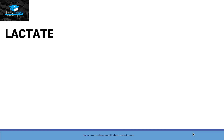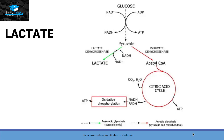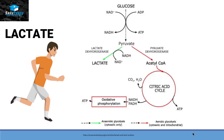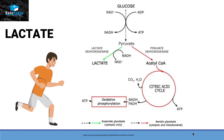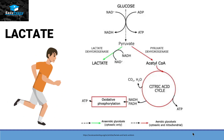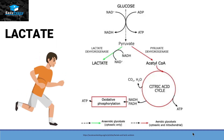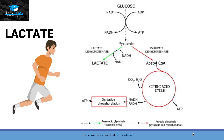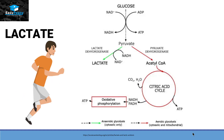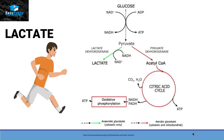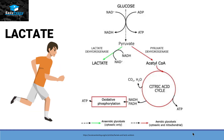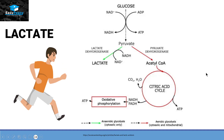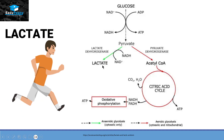Lactate is basically produced in our body due to anaerobic respiration. For example, if you are doing a tough exercise like running, aerobic respiration cannot provide enough ATP in order to meet the energy requirement. So that's why cells start producing ATP anaerobically and the byproduct of that process is lactate.